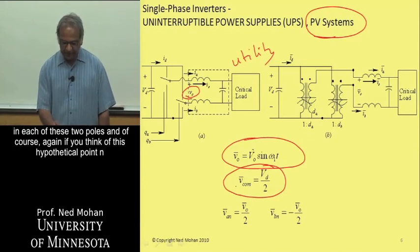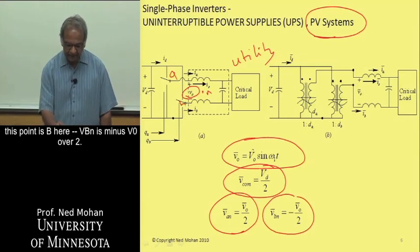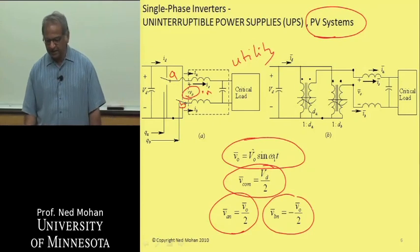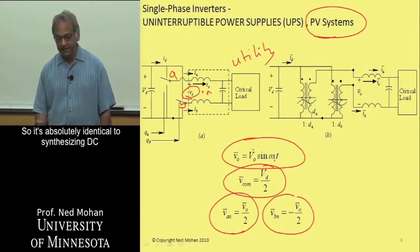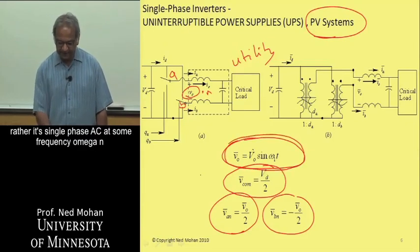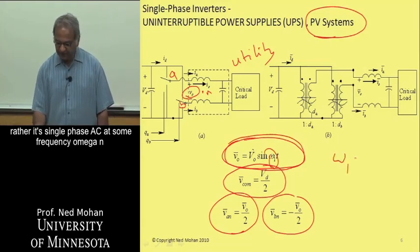And we will again introduce a common mode voltage of Vd over 2 in each of these two poles. And if you think of this hypothetical point N, then VAN is V0 over 2, VBN is equal to, where this point is A, this point is B here, VBN is minus V0 over 2. So it's absolutely identical to synthesizing DC, except here the output voltage is not DC, rather it's a single phase AC at some frequency omega N, which is 2 pi times F1.